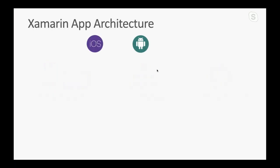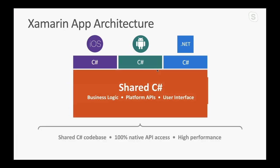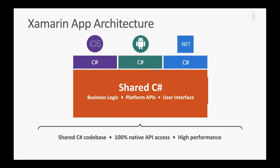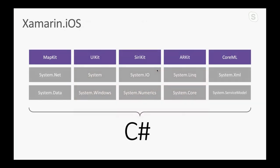I totally stole this slide from Maddie earlier, so thanks Maddie! But this is kind of what it looks like — you're writing shared code and shared logic all in C#, and the output is a native iOS app and a native Android app. You have all the system stuff available, all the native iOS UI kits, and similarly on Android you have all the awesomeness from Android, but you access all of it through C#.